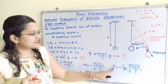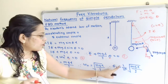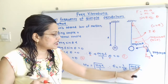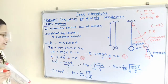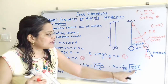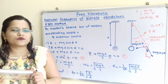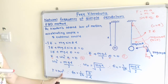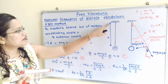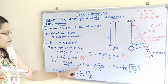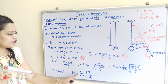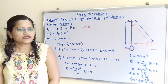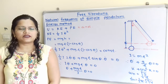The natural frequency fn equals omega-n divided by 2 pi, so fn equals (1 / 2pi) times the square root of MGL by I. Now, we can replace I with the mass moment of inertia for the bob, which is M times L squared. Substituting and simplifying, fn equals (1 / 2pi) times the square root of g divided by L. We now move to the second method: the energy method.